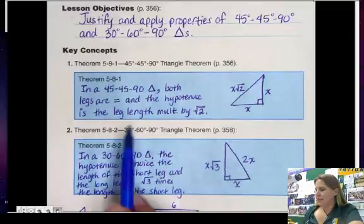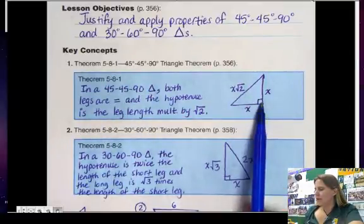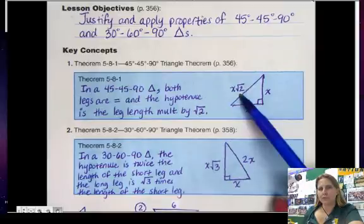You'll notice that in a 45-45-90 triangle, both legs are equal, and the hypotenuse is the leg length times square root of 2.